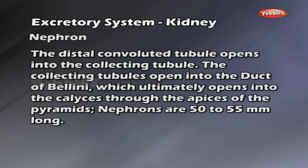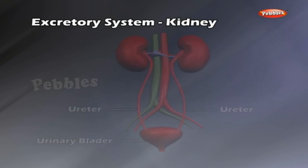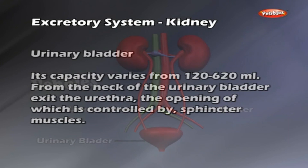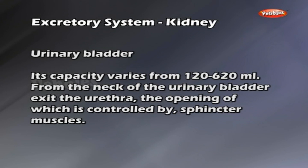Nephrons are 50 to 55 mm long. The two ureters connect the kidney with the urinary bladder. The urine from the pelvis reaches the urinary bladder through the ureters. The urinary bladder is a hollow muscular organ serving as a reservoir of urine. Its capacity varies from 120 to 620 ml. From the neck of the urinary bladder exits the urethra, the opening of which is controlled by sphincter muscles.